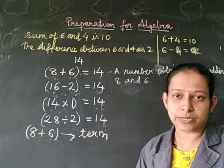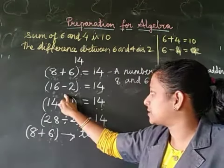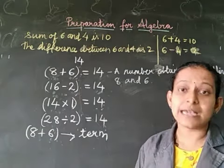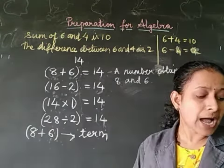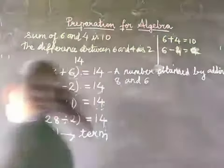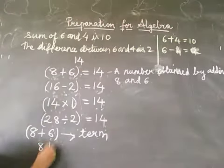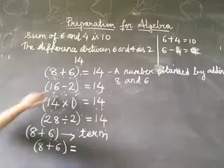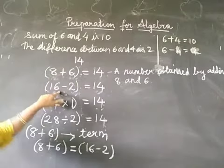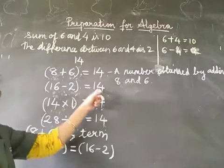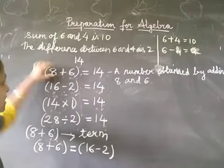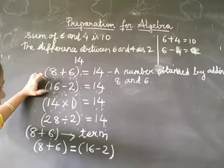Since the value of each of these terms or expressions is 14, we can say that all these expressions are equal to each other. So we can write 8 plus 6 is equal to 16 minus 2, because their value is the same — after adding and subtracting, you are getting the same answer.